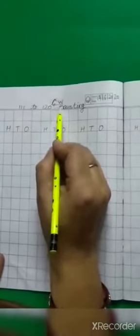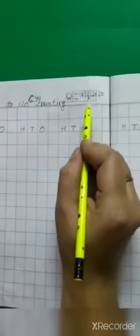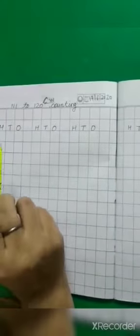Open your notebook. First of all, you have to mention CW, date 19.6.2020. Now we will learn counting 111 to 120 to write and learn. Let's start with me.